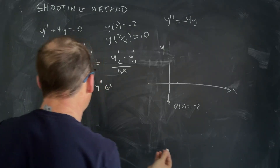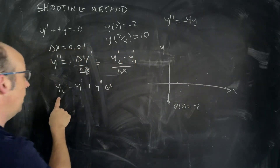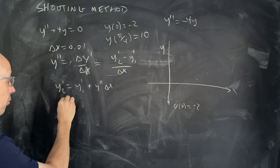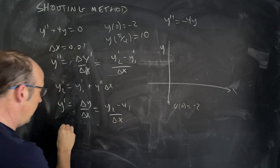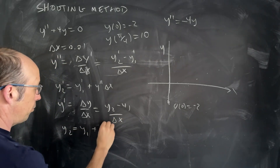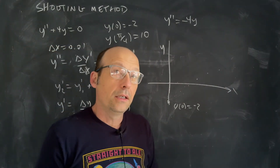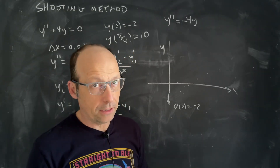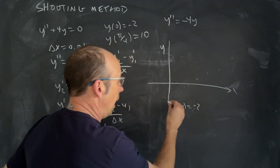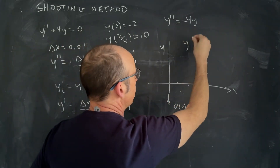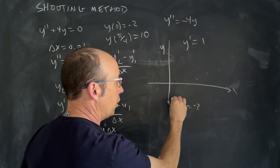The problem is I can't use the normal Euler method here because I don't know the initial slope — I only know y(0) is negative 2 and the final value y(π/4) is 10. So here's what we're going to do: I'm just going to pick an initial slope — say, y-prime equals 1 — and proceed forward from there.